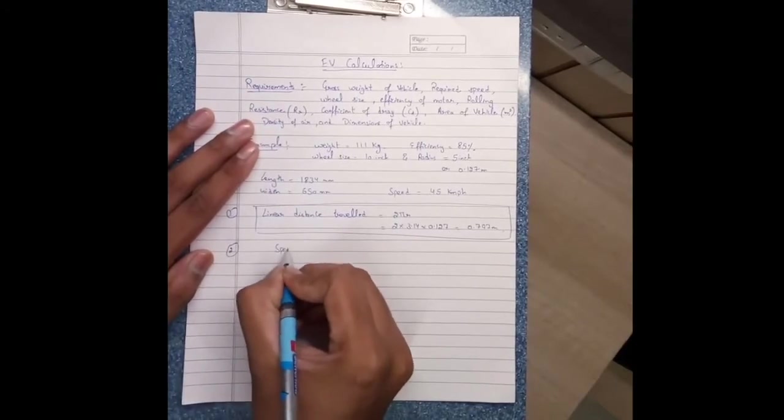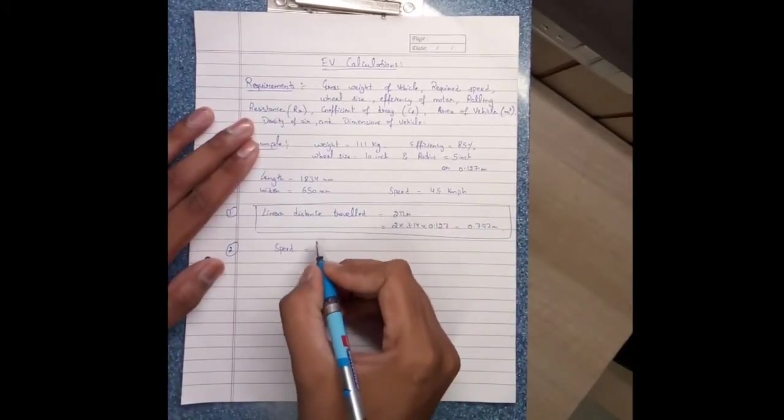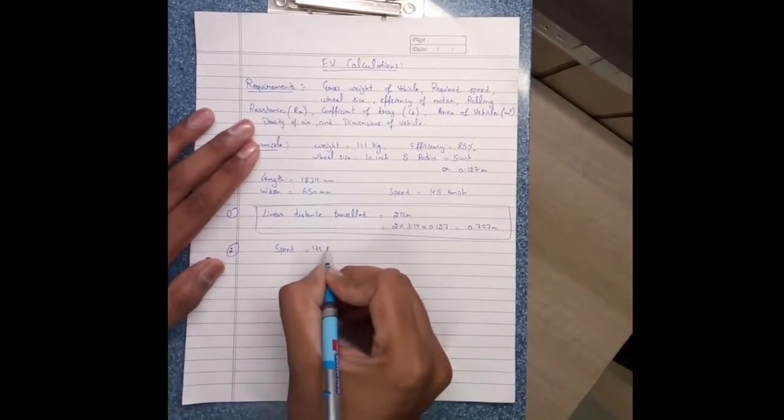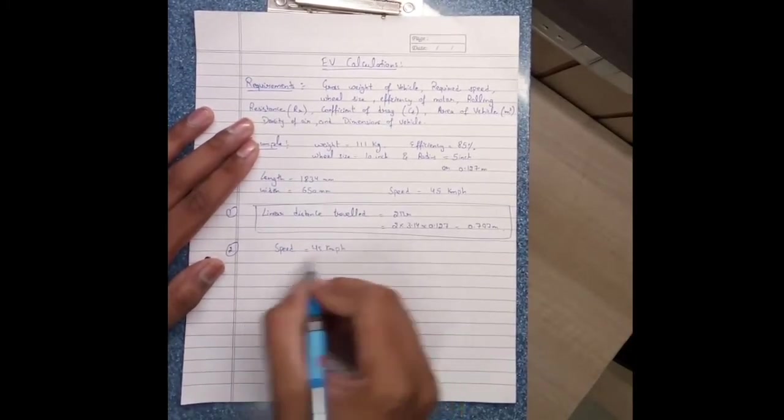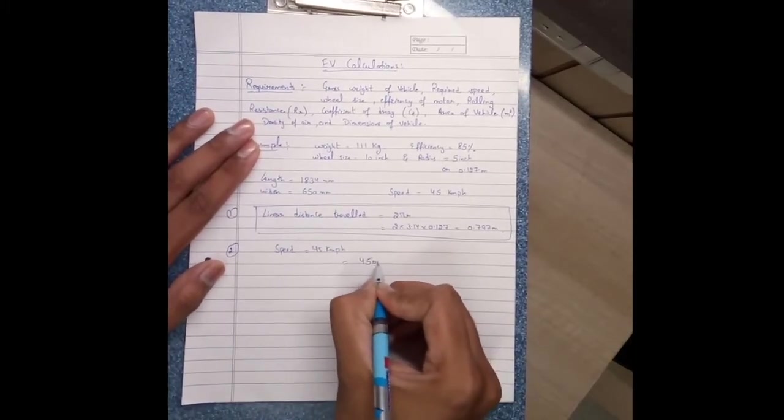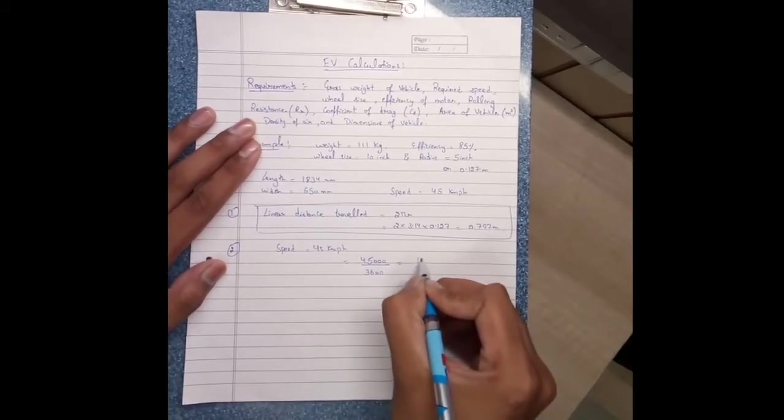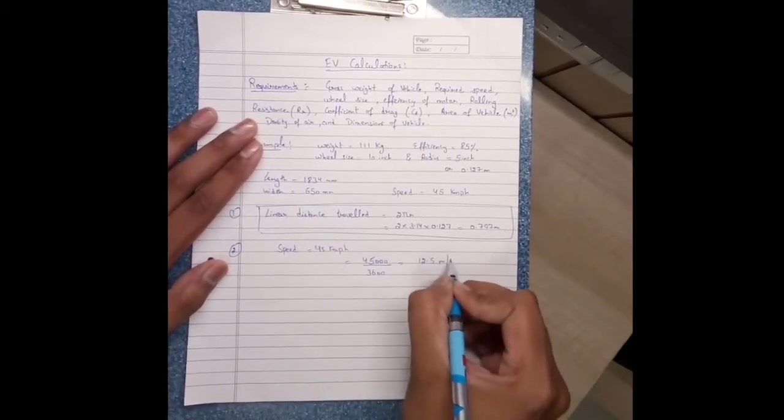Secondly, find speed in meters per second. We have speed in km per hour: 45 km per hour. We have to convert it into meters per second, so 45,000 divided by 3600, it comes to 12.5 meters per second.